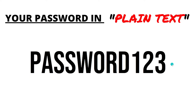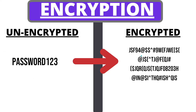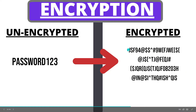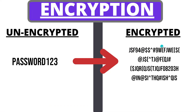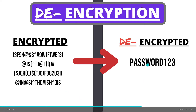These are the same thing. In simpler terms, encryption is the process of taking your unencrypted password or text and transforming it into its encrypted form to make it unreadable by an attacker. Decryption is taking the encrypted form of your password or data and transforming it back into its plain text form.